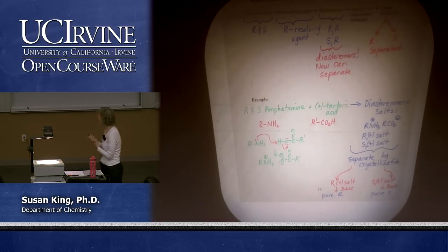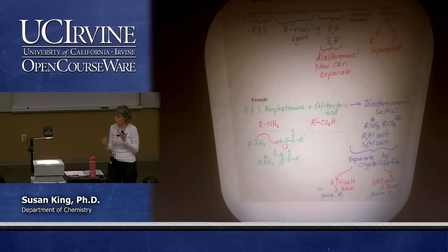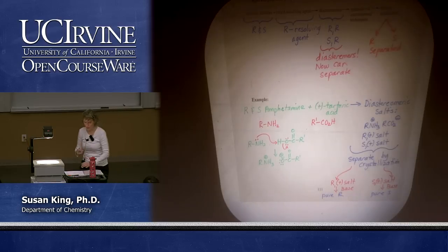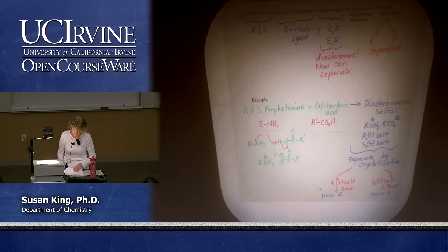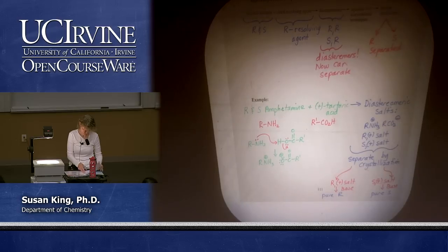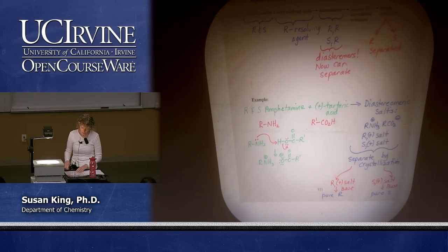There are also things called chiral columns and other more complicated techniques. It's not that easy to separate enantiomers. All right, that is chapter five.